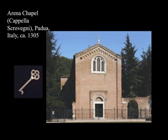Giotto received a series of very important commissions, including some work done in a chapel in Assisi. Following these commissions, his fame really grew, and he received probably the most important commission of his career — the creation of a cycle of frescoes within the Arena Chapel in Padua.